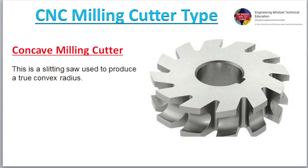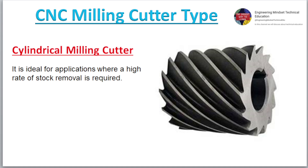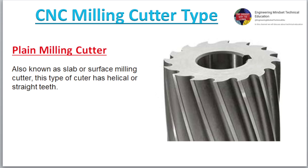Concave Milling Cutter. This is a slitting saw used to produce a true convex radius. Cylindrical Milling Cutter. It is ideal for applications where a higher rate of stock removal is required.